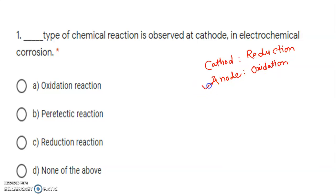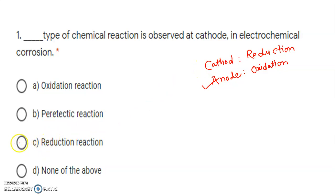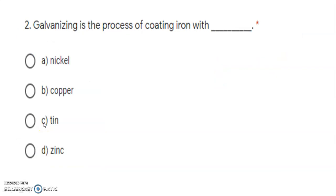Corrosion occurs at anode. Here, what is asked is which chemical reaction is observed at cathode. So, the correct option is reduction reaction. Option C is the correct answer.